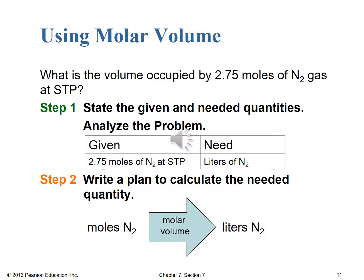For our practice problem: what is the volume occupied by 2.75 moles of nitrogen gas at STP? Step one, state the given and needed quantities: we're given 2.75 moles of nitrogen gas and that we're at STP, which is critical if we're going to use this relationship. Remember, the molar volume of a gas — that 22.4 liters equaling one mole — is only true at STP. What we need is the volume of nitrogen gas in liters. Step two, writing our plan: we have moles of N2 and we can use the molar volume conversion factor since we are at STP to get us into liters of nitrogen.